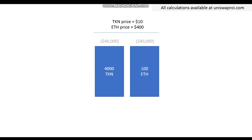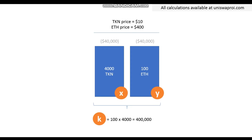Each of them is worth $40,000 — 100 times 400 is 40,000, and 4,000 times 10 is 40,000. If you're familiar with the way Uniswap works, the market making function is X times Y equals K. X is the size of the token pool, so it's 4,000. Y is the size of the Ethereum pool, so it's 100, and K is the product of the two, so it's 400,000.